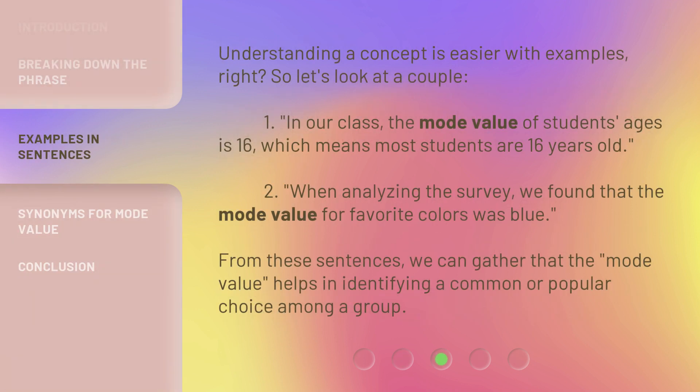Understanding a concept is easier with examples, right? So let's look at a couple. One: In our class, the Mode Value of students' ages is 16, which means most students are 16 years old.